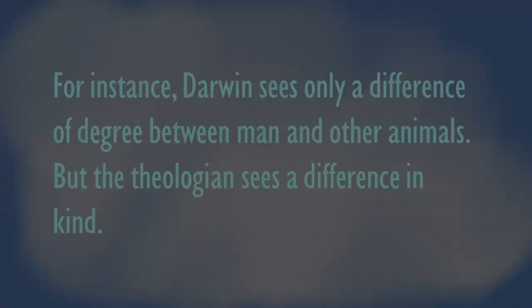Burke points out that evolutionary biology uses different terms from those used in theology — one uses the term 'God' with all its implications, the other doesn't. These different terminologies set up different terministic screens, filtering perceptions in different ways. He writes: 'Darwin sees only a difference of degree between man and other animals, but the theologian sees a difference in kind.' The set of terms including natural selection, fitness, and genetics tends to filter out evidence of fundamental differences between humans and animals, whereas the set including creation, spirit, and eternity tends to filter out the fundamental similarities.